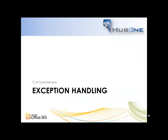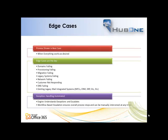Obviously there are a bunch of exceptions that can happen and we've created those in an escalation workflow within the engine. The workflow you've just seen is the best case — it's when everything works as desired. But the key is edge cases: how do we handle domains failing, provisioning failing, migration failing, legacy systems falling over, the network not working, the customer not getting back to us, DNS failing, or issues with existing machines or existing systems integrated with the legacy mail platform — for example, multi-function copiers, CRM, ERP, etc. The engine has been designed to understand those escalations, and because we have a workflow-based escalation, we can stop the process at any time and send somebody on-site without the workflow getting upset. So it's all integrated together.